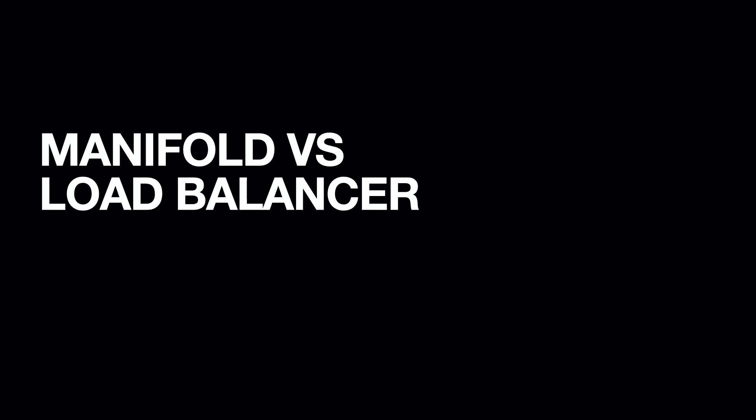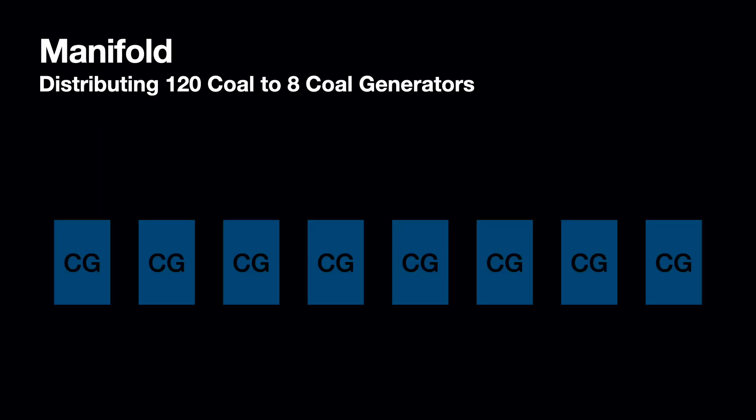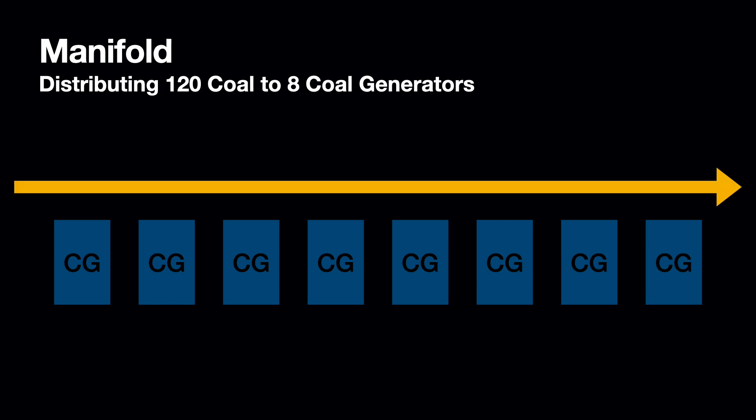So let's look at the manifold first. This is how you would build it for our example. You start with lining up your generators, then you draw a conveyor belt next to the inputs, and finally split the belt for each generator. Actually there's an even better way to build it, but more on that later.